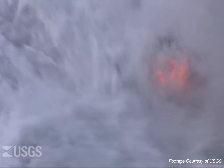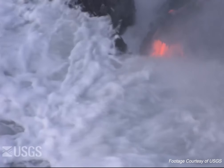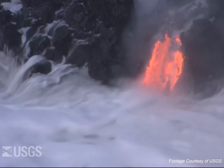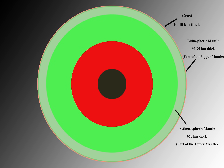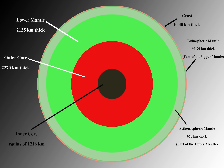Most of us are comfortable with the concept of magma, but how many of us are comfortable with the conditions under which magma forms? Consider a simple cross-section of the earth. Most people understand that the earth consists of three great compositional layers: the crust, the mantle, and the core. Many people mistakenly think that the mantle is molten, but while it is very hot rock, it is also pretty solid rock. If neither the crust nor the mantle are molten, where do the magmas that feed earth's volcanoes come from?